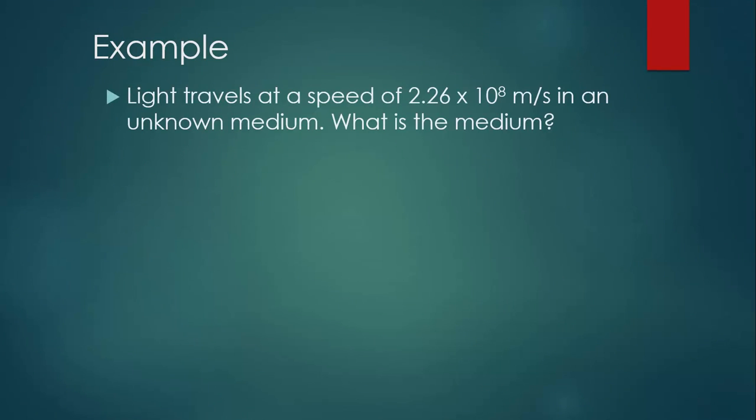Here's another example. Light is traveling at a speed of 2.26 times 10 to the 8 meters per second in an unknown medium. Let's figure out what that medium is.